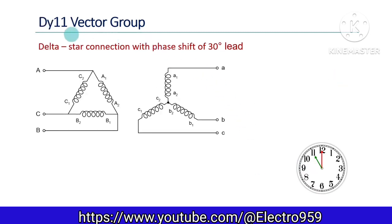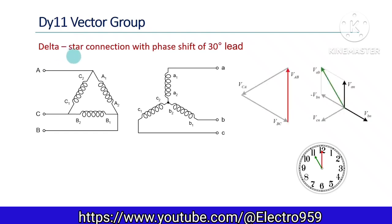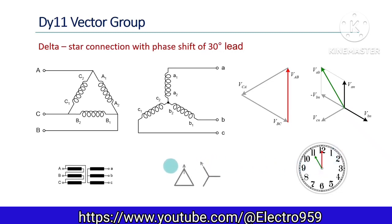The last one in this listing is the DY11 vector group. The primary is delta connected and the secondary is star connected. In the phasor diagram, the voltage induced in winding A of the secondary will be in phase with the primary line voltage. The line voltage VAB in the secondary is obtained by VA minus VB as shown. Finally, the line voltage is leading by 30 degrees from the corresponding primary voltage — the 11 o'clock position matches here also. The simplified connection diagram and displacement diagram are shown.